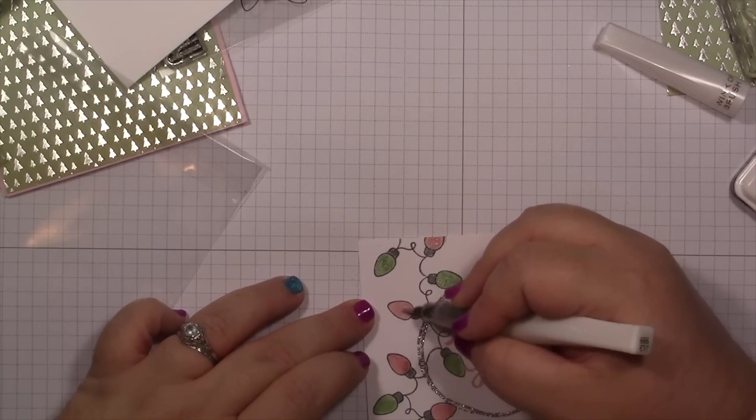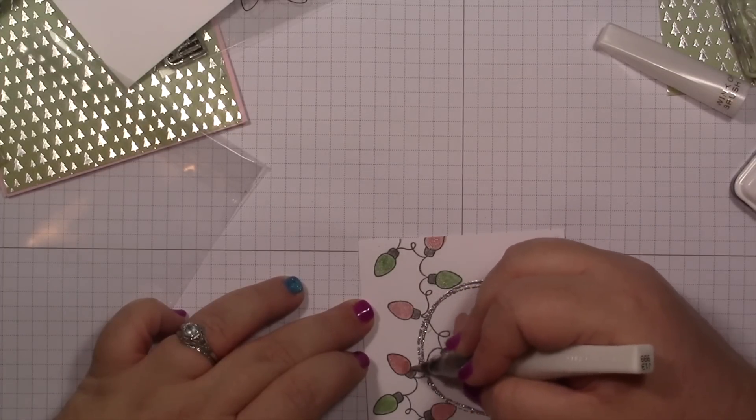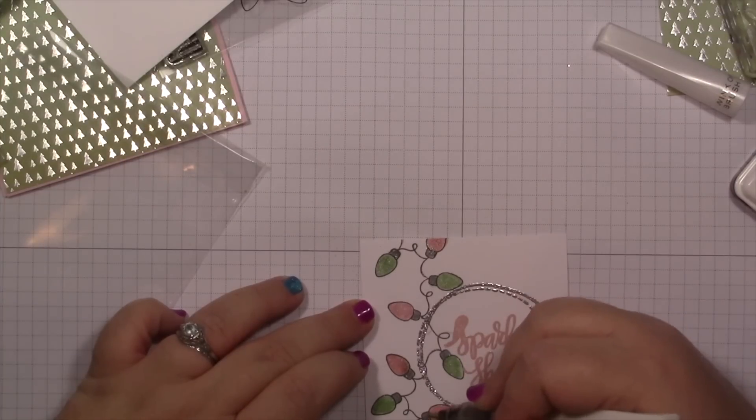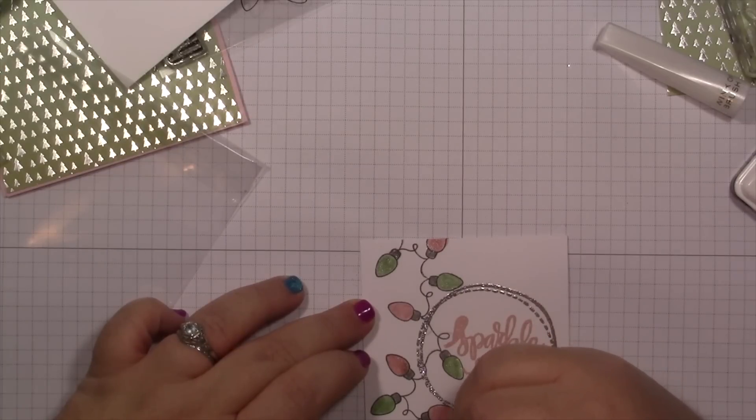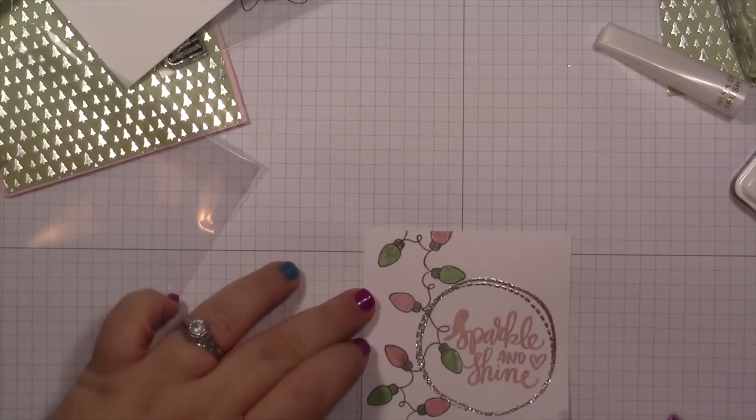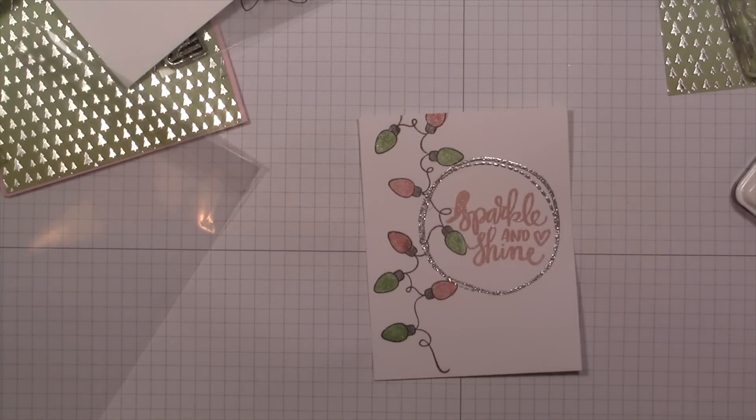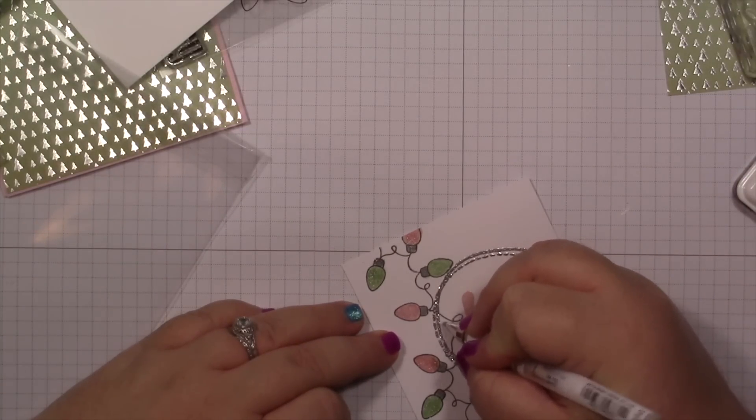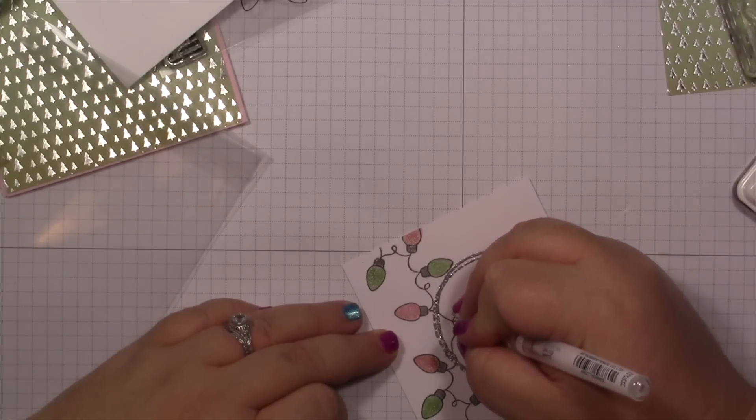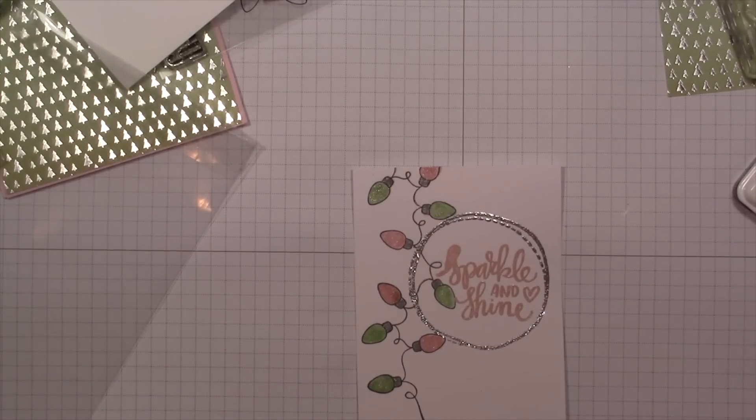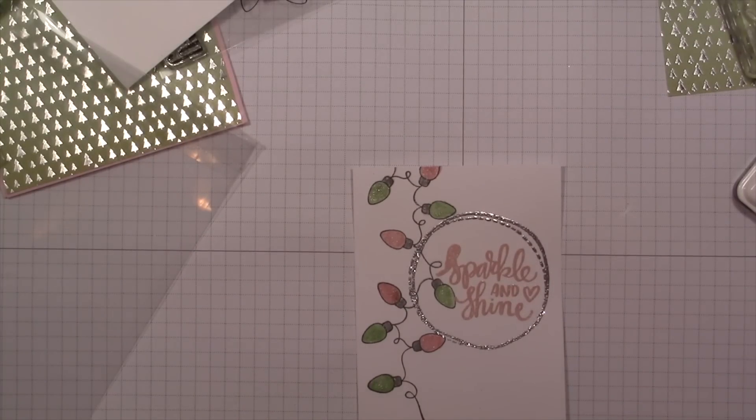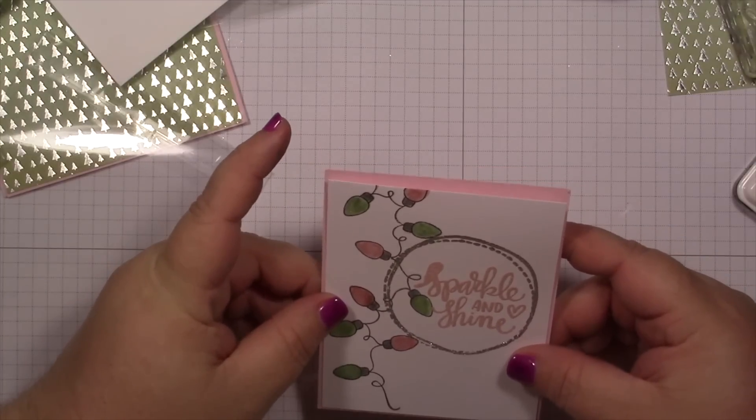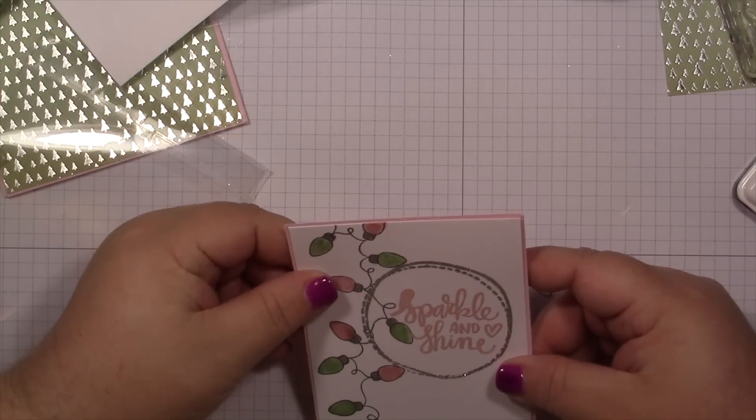Then I'm going to hit them with my Wink of Stella. Perfect. And then I got that little shadowing so I'm going to take a white gel pen and color it in. Let's see how this lines up.